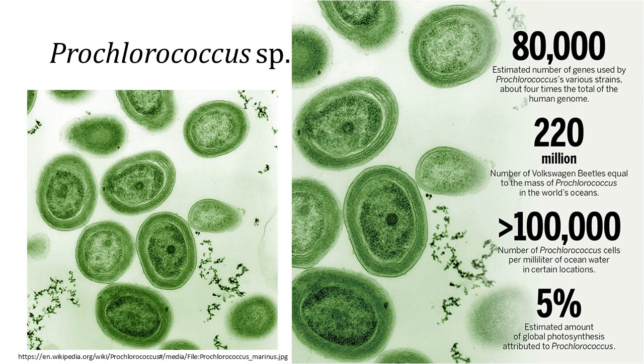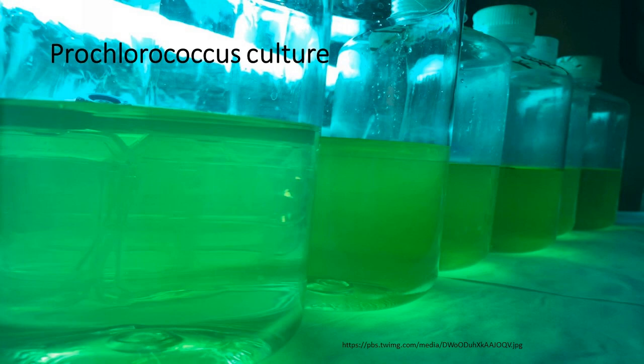The smallest of all, Prochlorococcus, is just 0.5 to 0.8 micrometers in diameter. In terms of individual numbers, Prochlorococcus is possibly the most plentiful species on Earth.